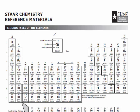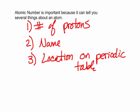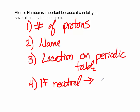We're going to get into a little more detail about why the periodic table is shaped this way in a later video. But more important right now is that the atomic number is how the periodic table is organized, left to right, top to bottom. And then finally, if an atom is neutral, then it will also tell you the number of electrons.